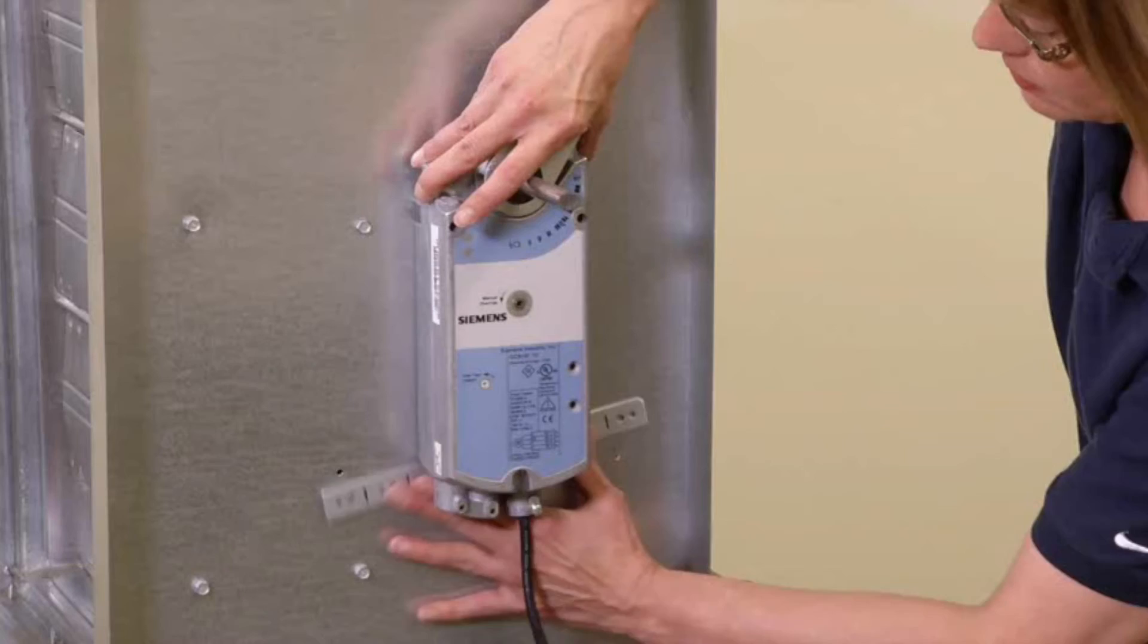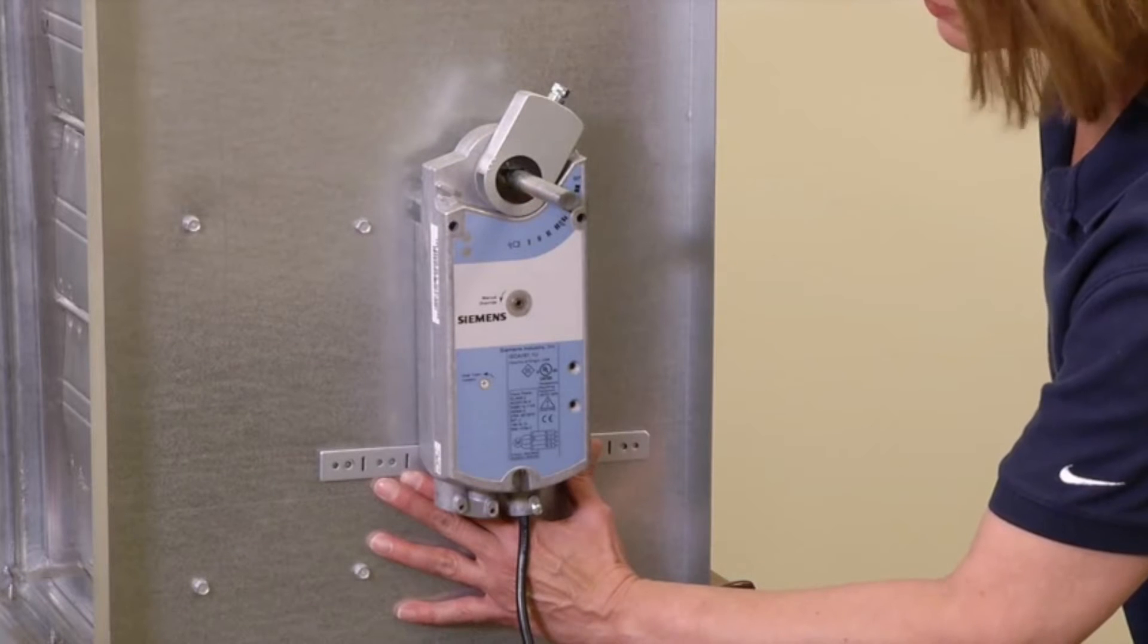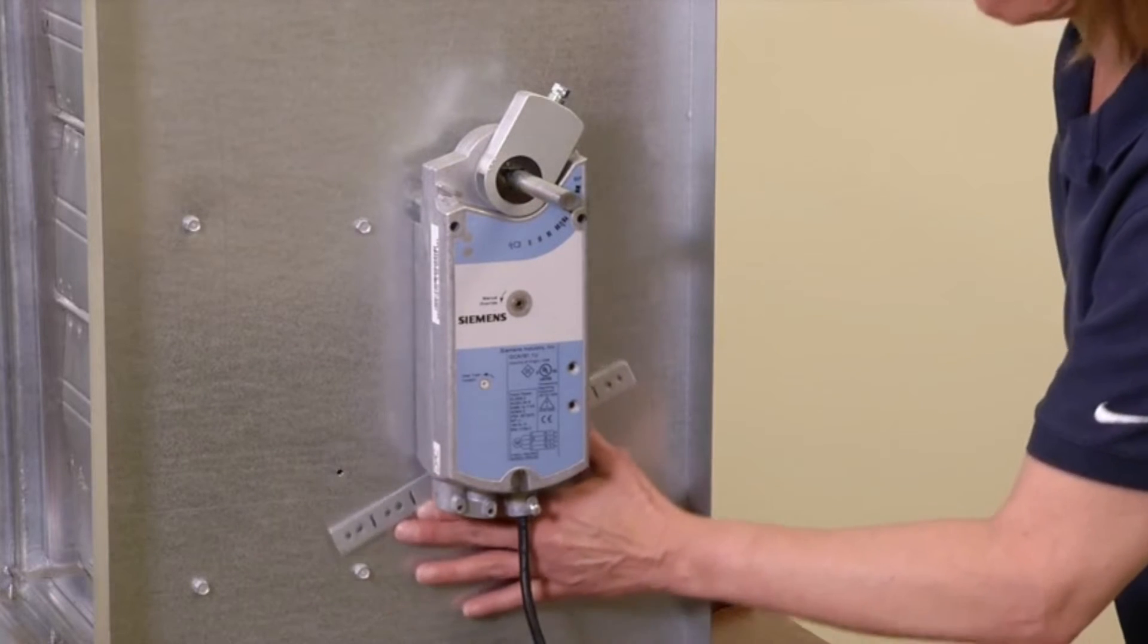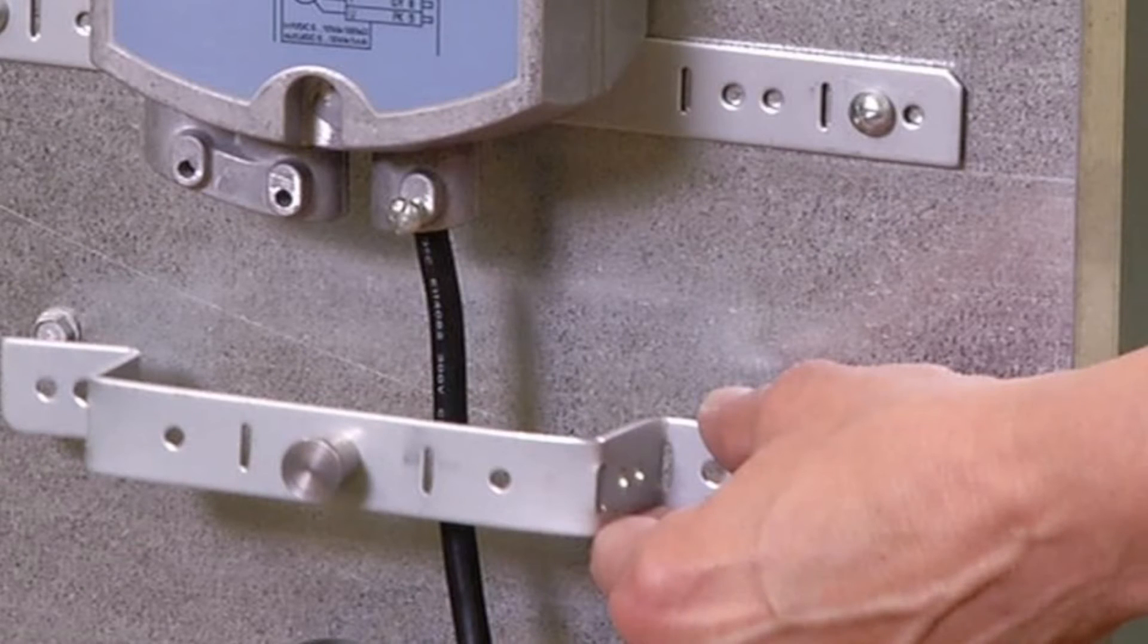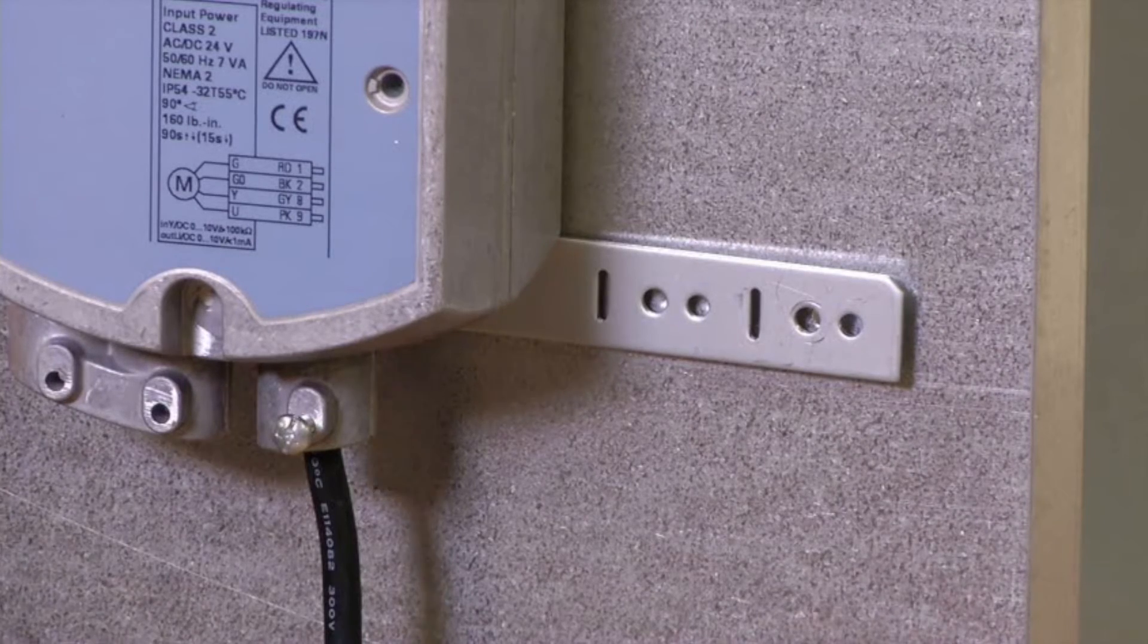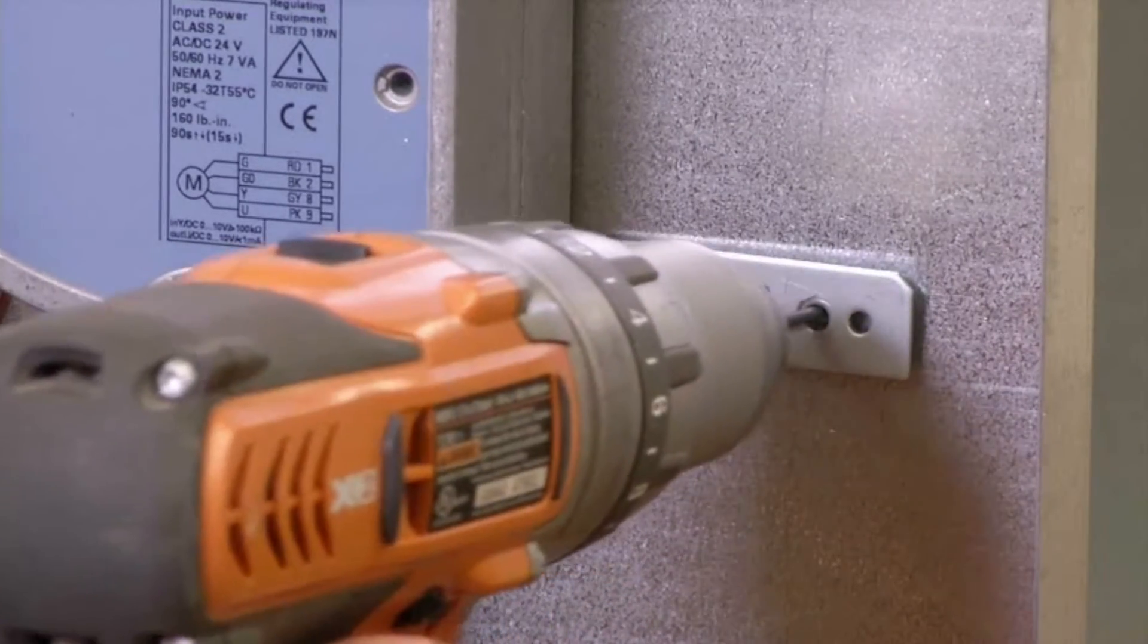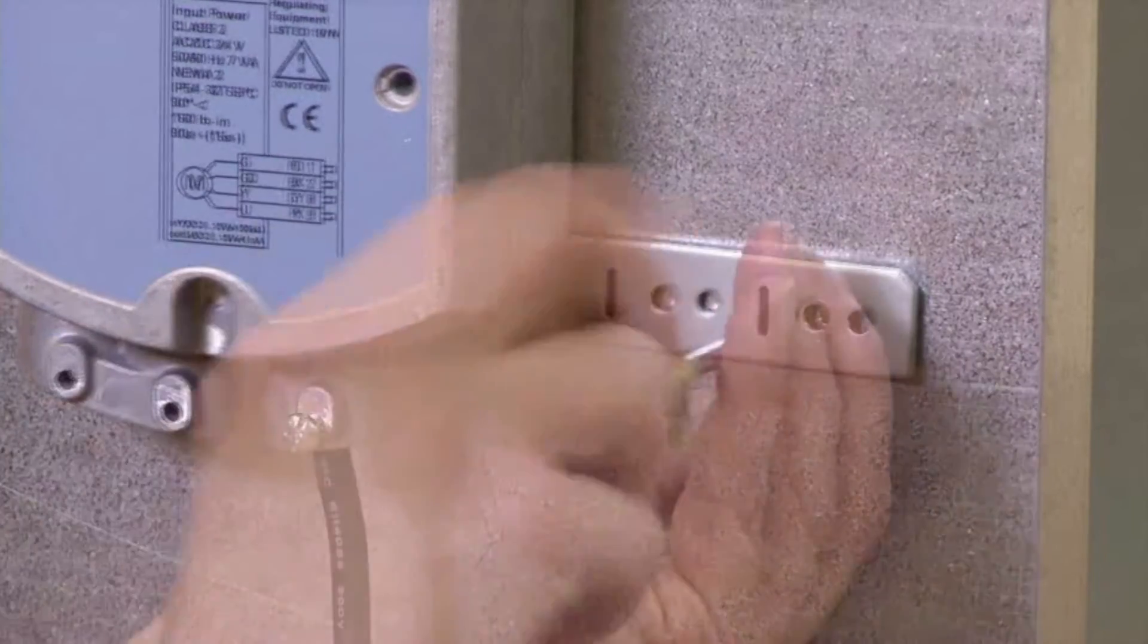Next, insert the anti-rotation bracket into the slot at the bottom of the actuator. This bracket can be oriented at different angles or bent to stand off in an application. Using the holes in the anti-rotation bracket as a guide, drill a hole at each end of the bracket. Then, secure the bracket with the screws provided or use self-tapping screws.